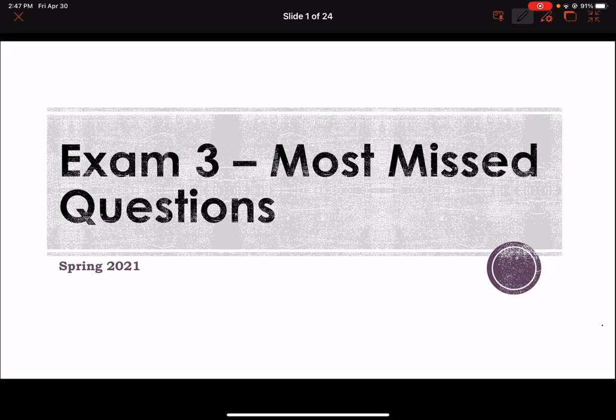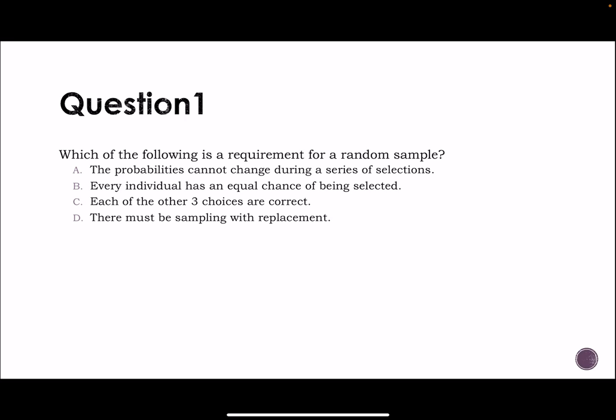Okay guys, so this is the exam three most missed questions. We're going to start off here with which of the following is a requirement for random sampling. The probabilities cannot change during a series of selections. Every individual has an equal chance of being selected. Each of the three choices are correct. And D, there must be sampling with replacement.